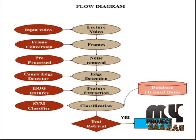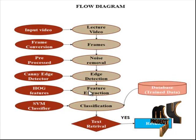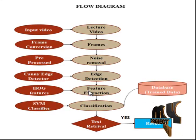In the feature extraction process, the HOG feature extraction method is used. Histogram of Oriented Gradients is a feature descriptor used in computer vision and image processing for the purpose of object detection. The technique counts occurrences of gradient orientation in localized portions of an image. This method is similar to edge orientation histograms and scale-invariant feature transform descriptors, but differs in that it is computed on a dense grid of uniformly spaced cells and uses overlapping local contrast normalization for improved accuracy. The first step of calculation is the computation of gradient values using the one-dimensional centered point derivative mask in the horizontal and vertical directions.